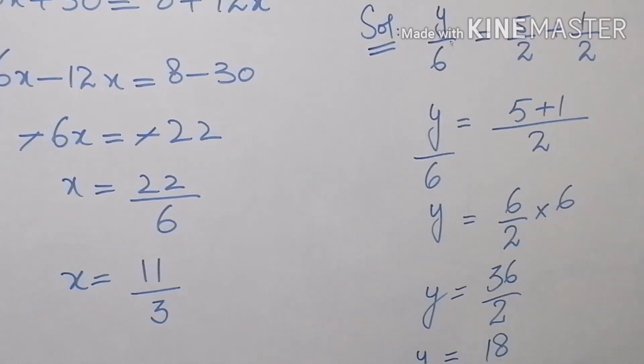6 over 2 and this 6 is dividing here, y divided by 6. So, when you will take this 6 to the other side, it will be multiplied with this fraction. So, here I am going to multiply this 6 with this fraction and the answer will be and the final value after the multiplication will be 36 over 2. So, the answer of y is 18.